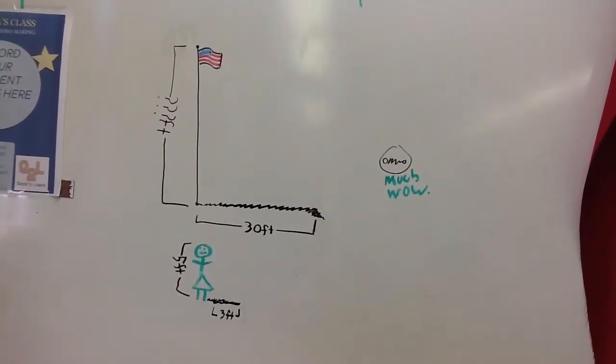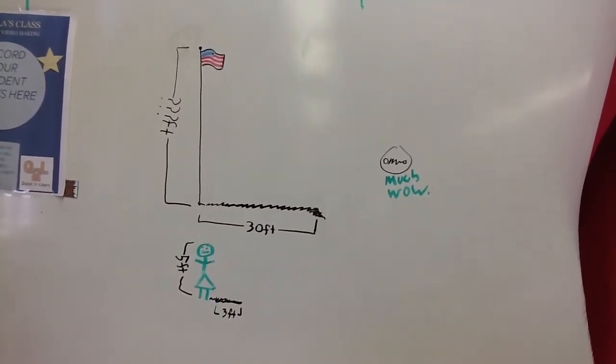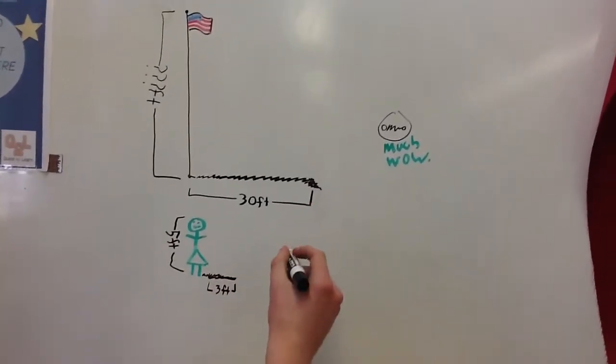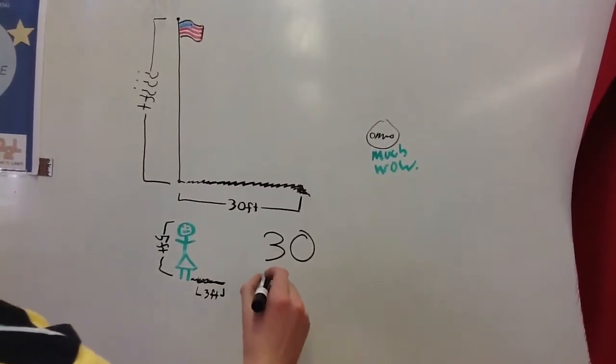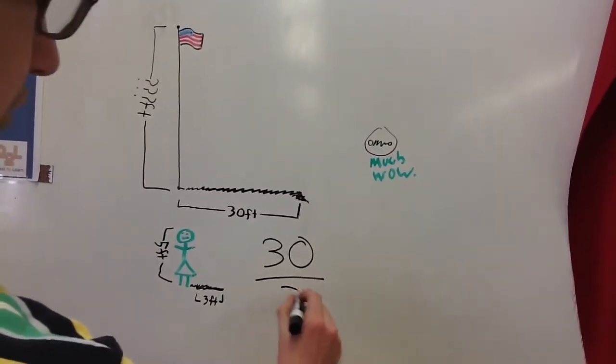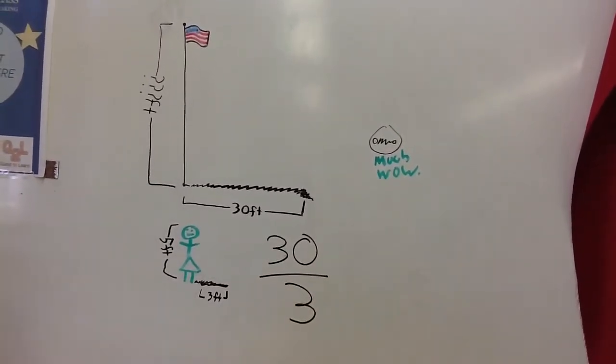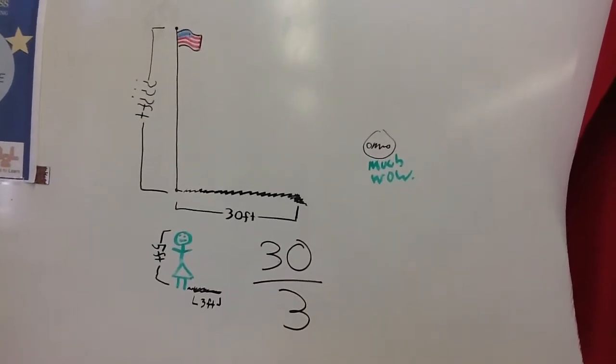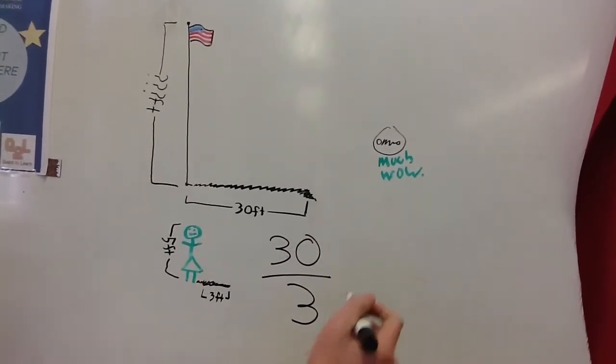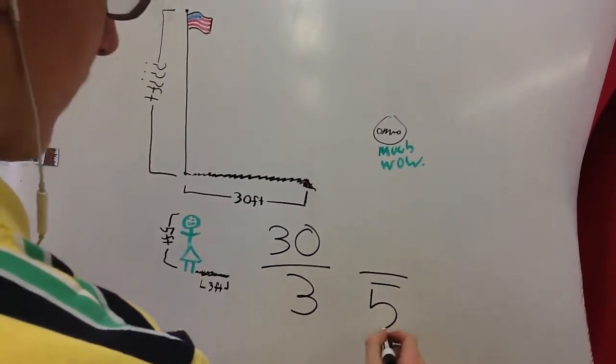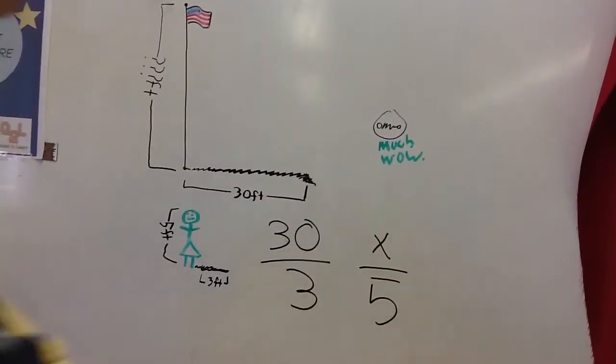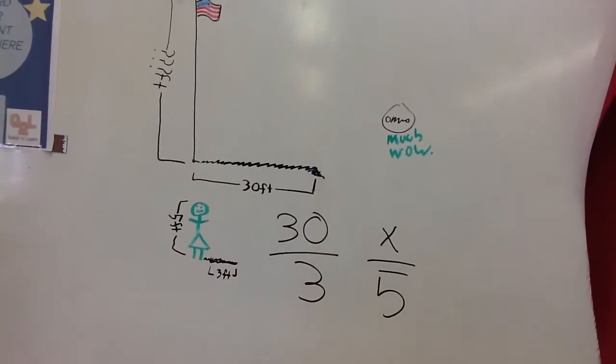Our goal is to figure out how tall the flagpole is. If we take the 30 feet of the shadow length of the flagpole and the 3 feet of the shadow length of the human, tie it together with the known length of the human and the unknown height of the flagpole.